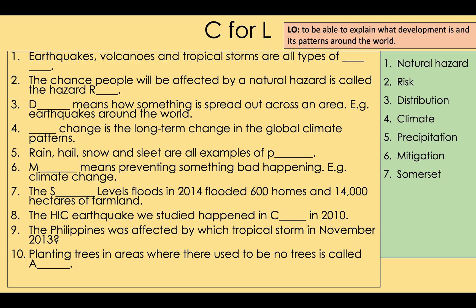Number seven: the Somerset Levels floods in 2014 flooded 600 homes and 14,000 hectares of farmland — make sure you learn some of these facts. Number eight: the HIC earthquake we studied happened in Chile in 2010. Number nine: the Philippines was affected by typhoon Haiyan in November 2013. Number ten: planting trees in areas where there used to be no trees is called afforestation.